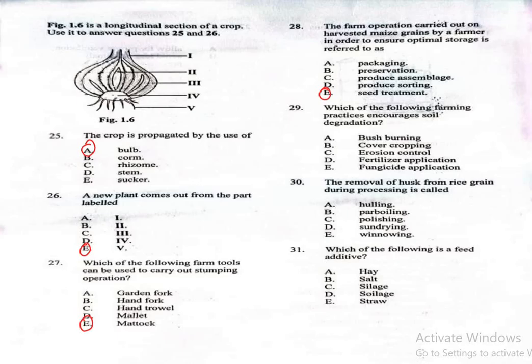Question 29. Which of the following farming practices encourages soil degradation? A. Bush burning, B. Cover cropping, C. Erosion control, D. Fertilizer application, E. Fungicide application. The correct answer is bush burning, which is option A. Bush burning destroys organic matter and microorganisms in the soil, leading to soil degradation.